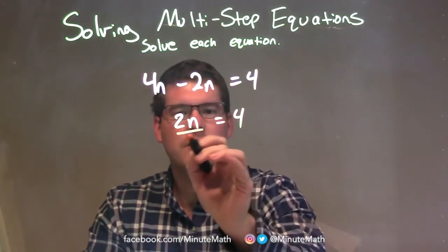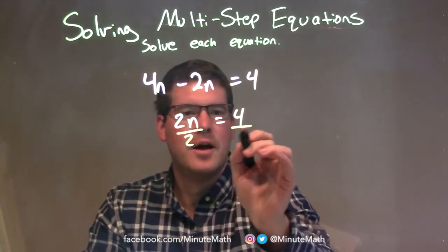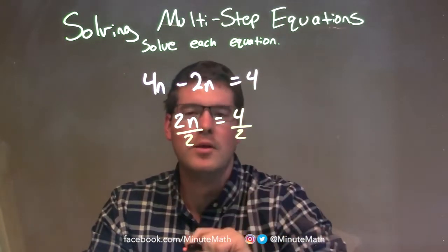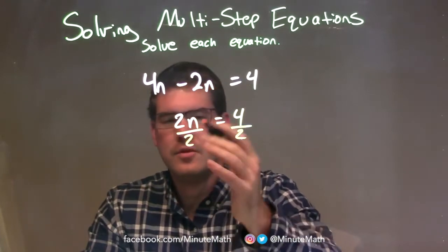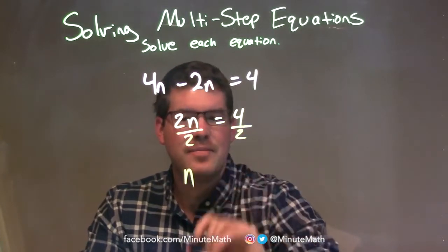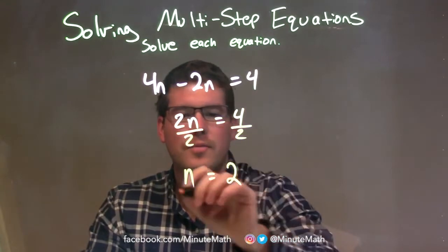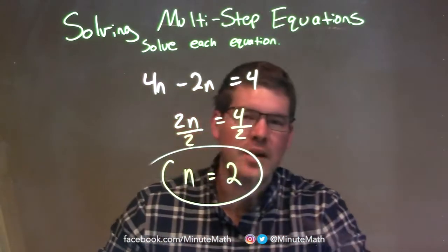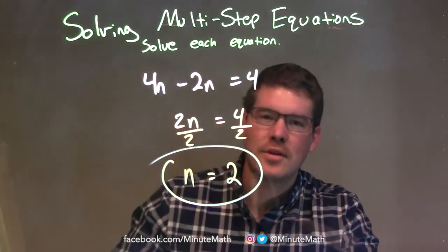I need to divide by 2 on both sides because I'm multiplying by 2 right here. I have to do the opposite by bringing it over the equal side. The left-hand side: 2n divided by 2 is just n. On the right-hand side, 4 divided by 2 is 2. Our final answer here is n equals 2.